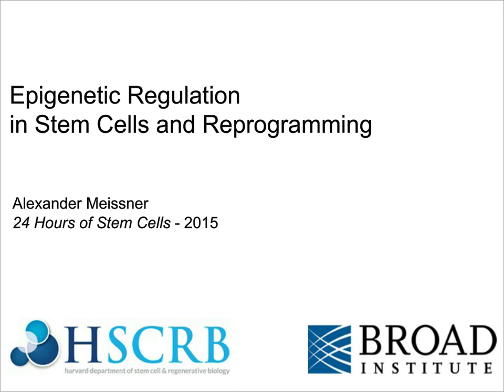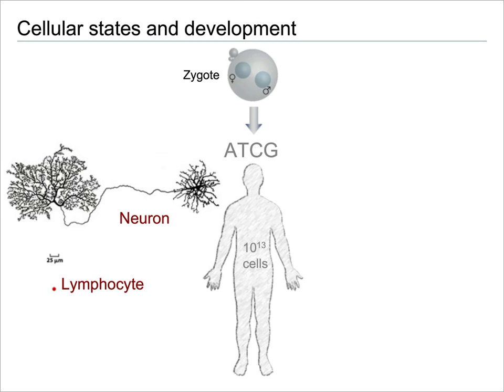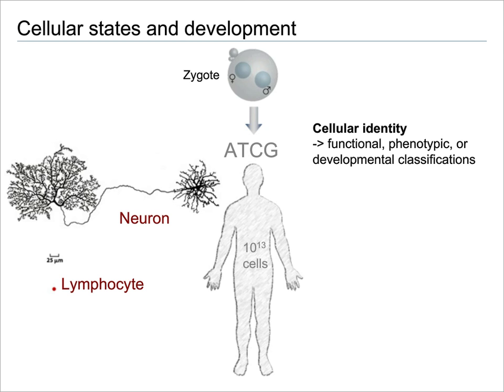When we're looking at normal development, we're particularly fascinated by the zygote and how a single genome can give rise to hundreds of cell types, trillions of different cells, with fates that are as diverse as a neuron or lymphocyte shown here. Classically, cellular identity has been defined using functional, phenotypic, or developmental readouts.